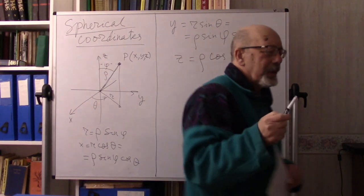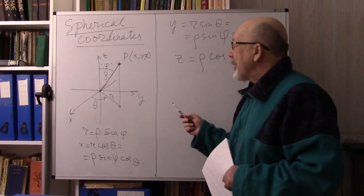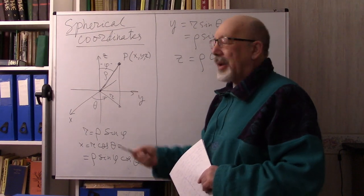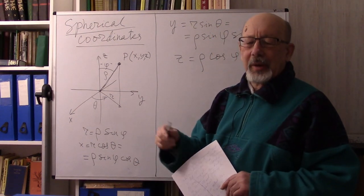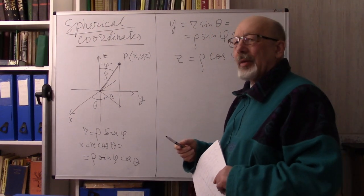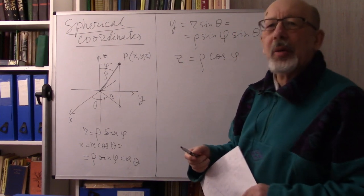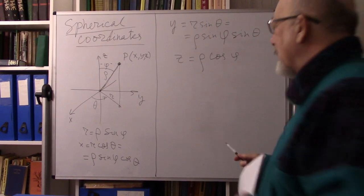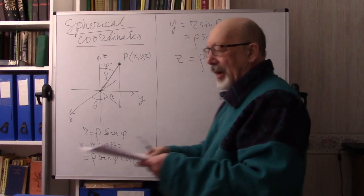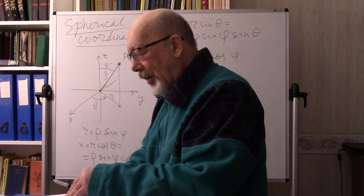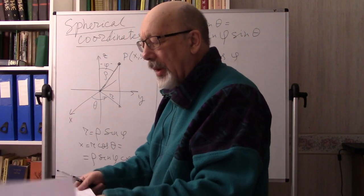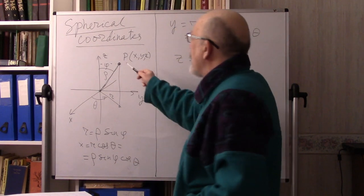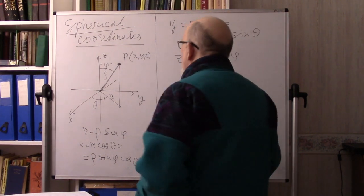Of course, we can express the new coordinates rho, phi, and theta in terms of the Cartesian coordinates, but we don't need it, so I'm not going to do it now. These are the coordinates. Now we have to find the volume element in these coordinates.